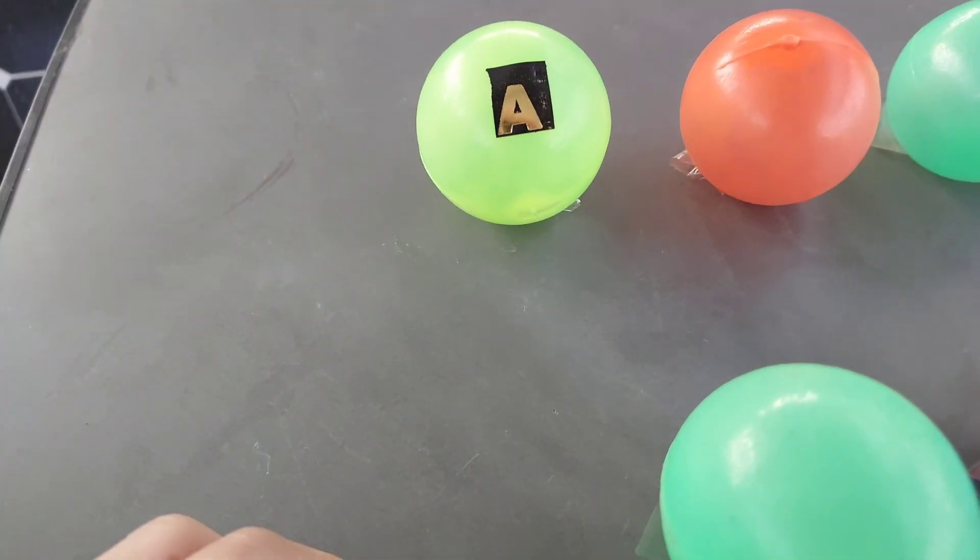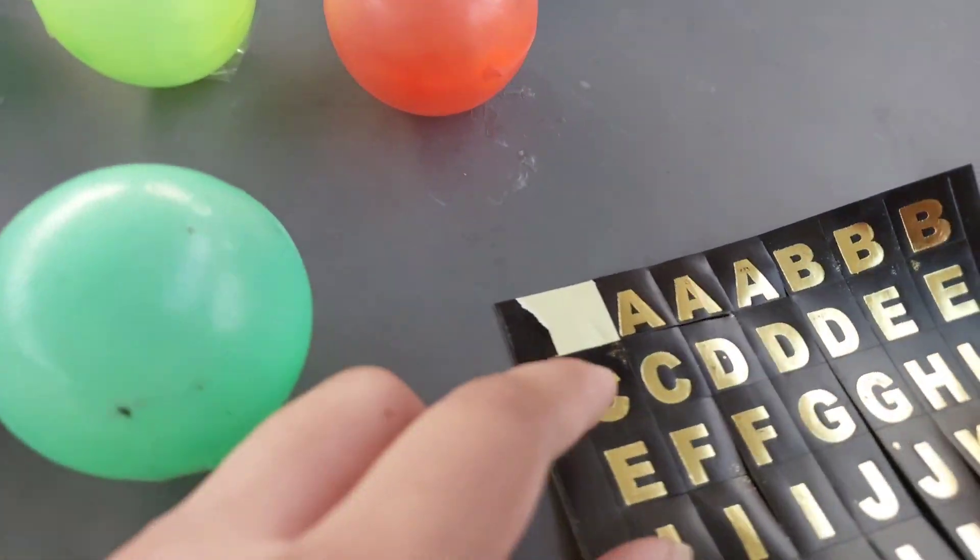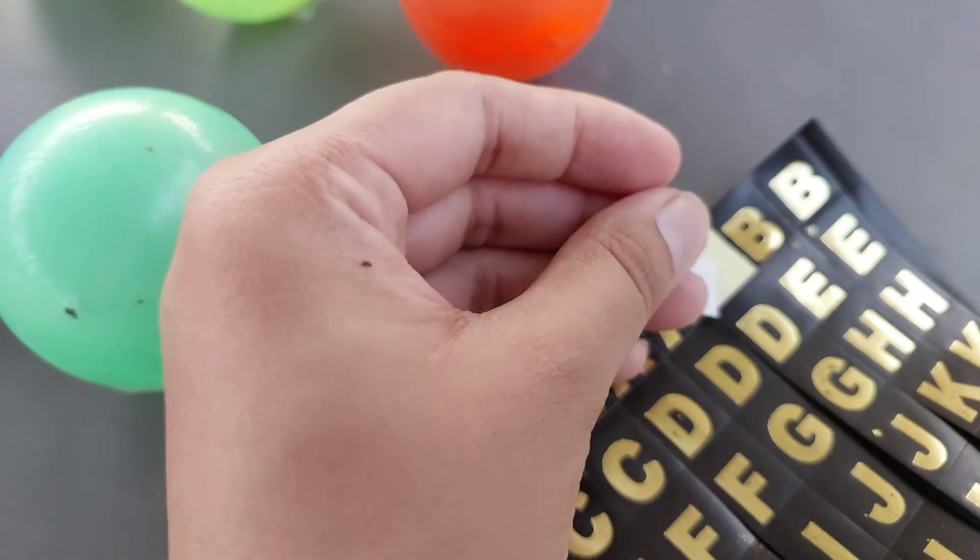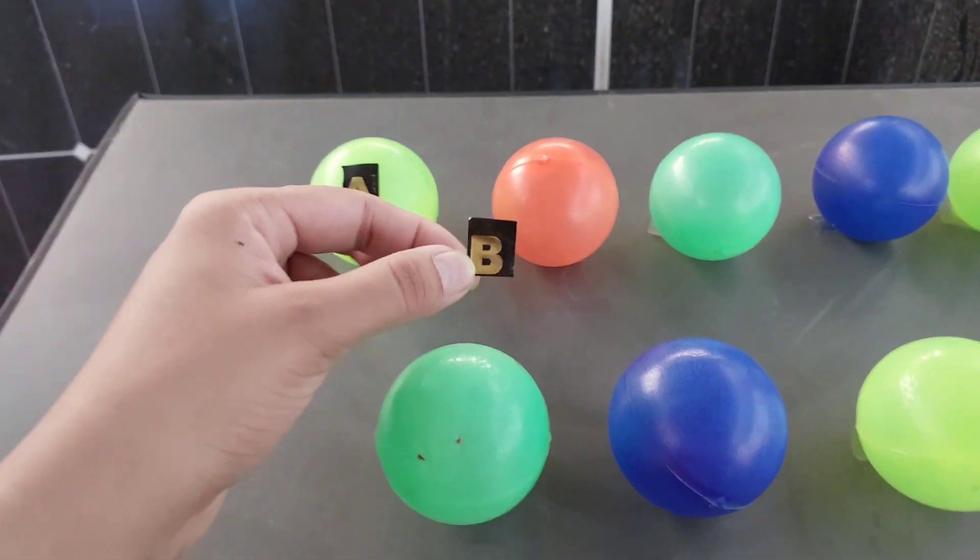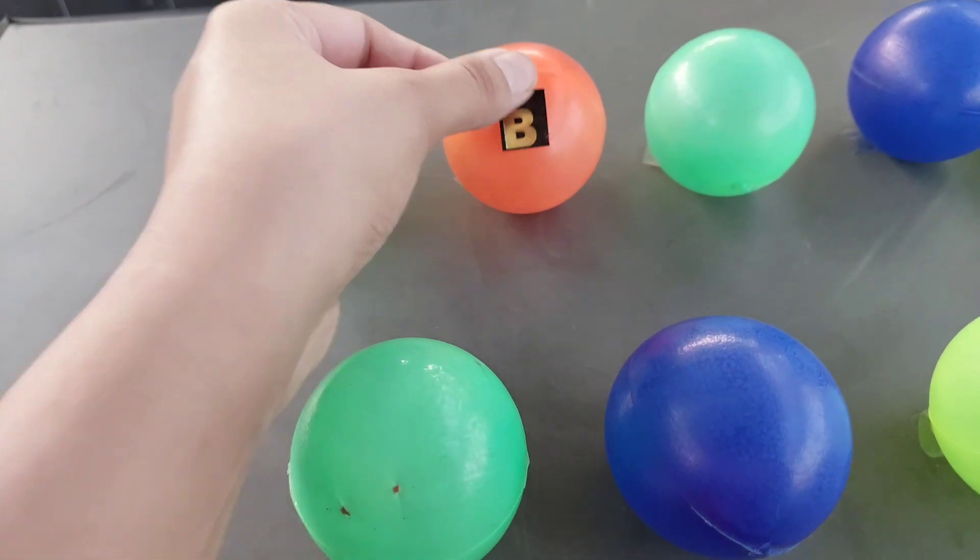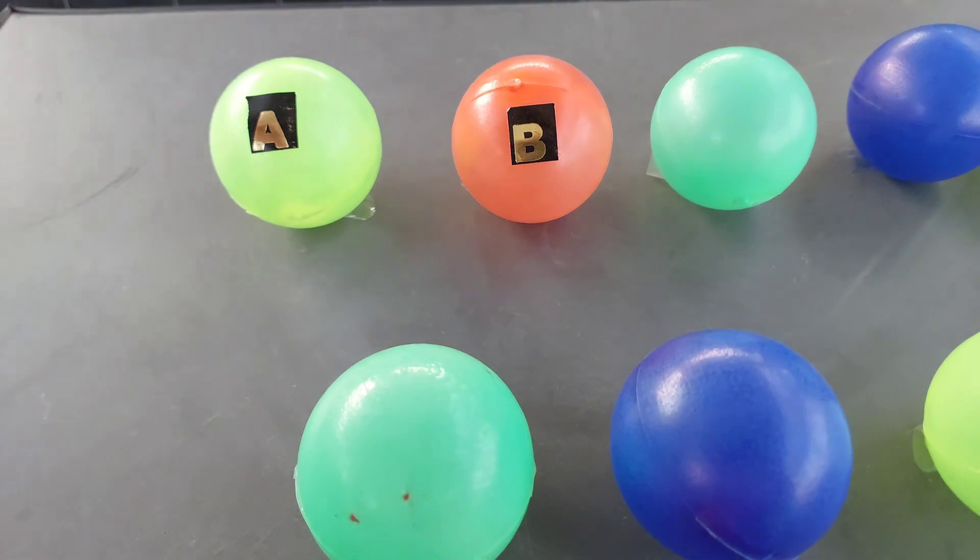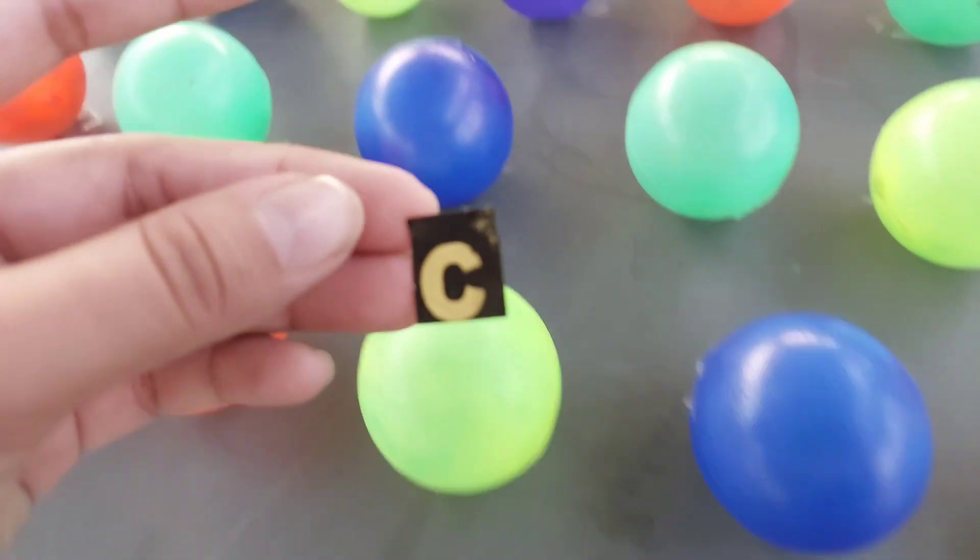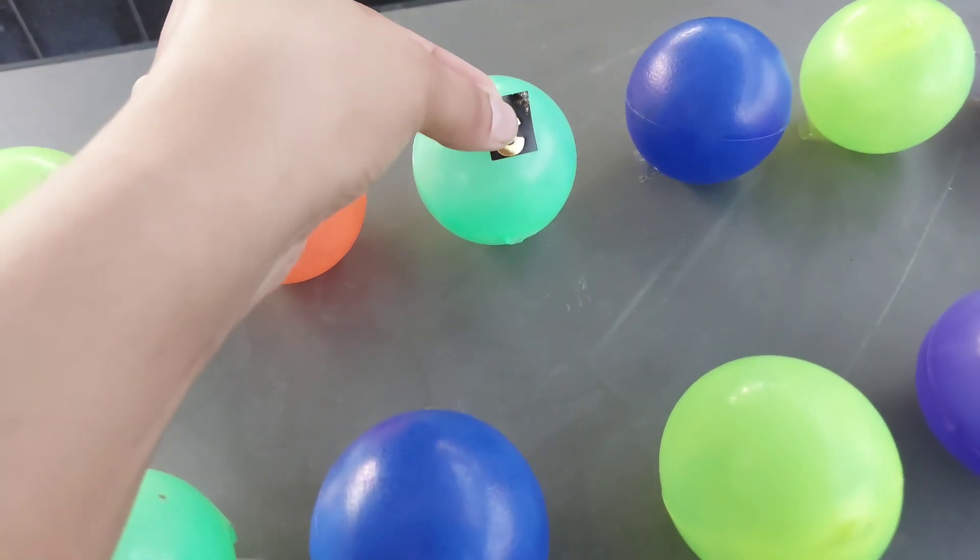A is for apple. The letter B. B is for ball. The next letter is C. C is for cat.